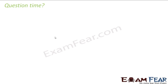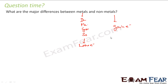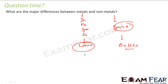What are the major differences between metals and non-metals? Metals are ductile, malleable, good conductors, and sonorous, while non-metals do not have these properties. Metals lose electrons and non-metals gain electrons. Metals are hard and non-metals are brittle. Metals are sonorous and non-metals are non-sonorous.